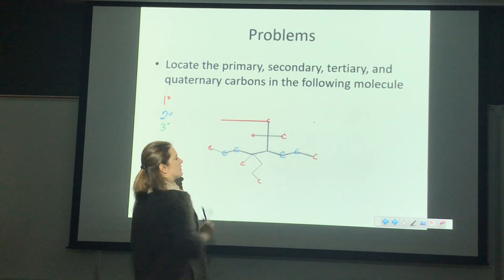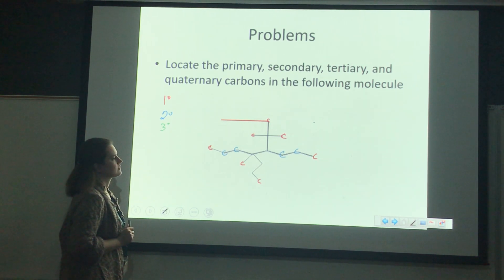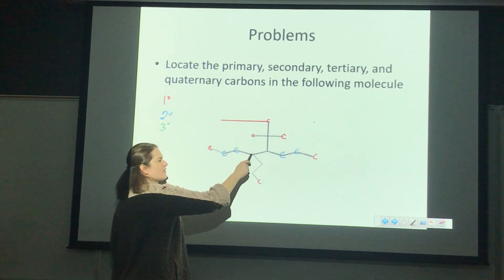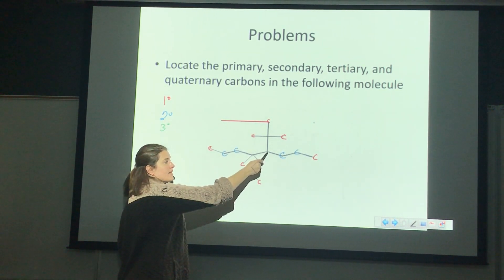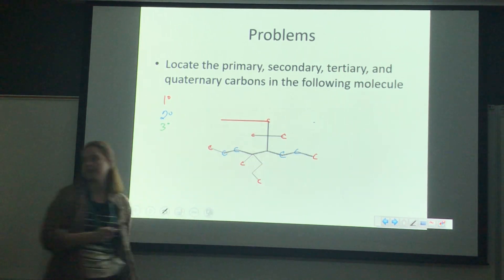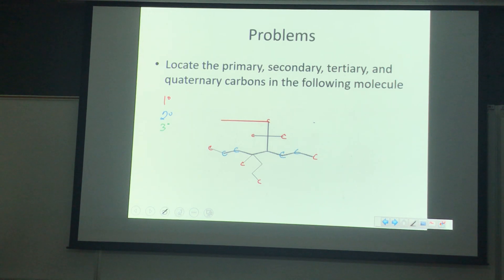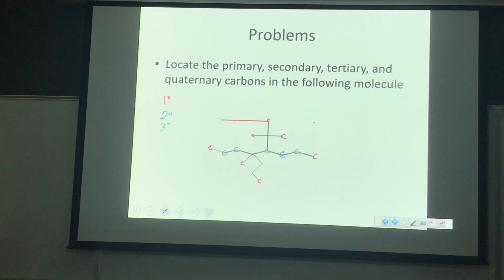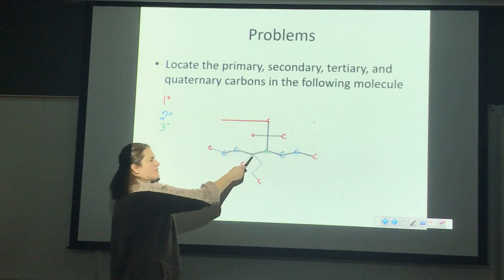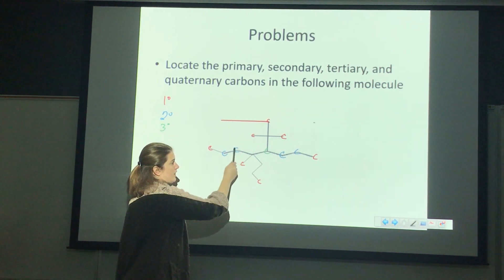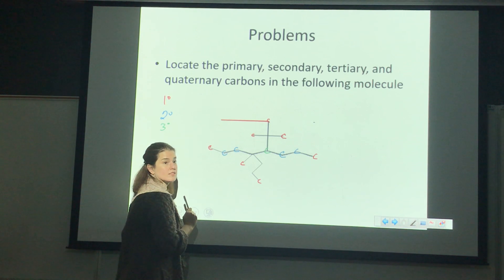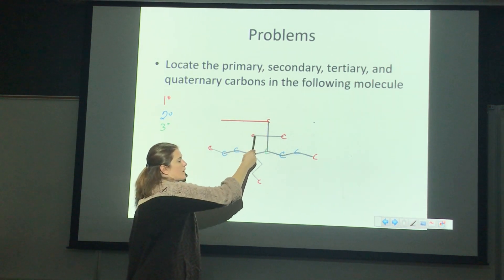If we look at the structure, you can see a whole lot of primary carbons — those are carbons bonded to just one other carbon and three hydrogens. The secondary carbons are bonded to this carbon and that carbon, which only leaves room for two hydrogens following the octet rule. We've got our tertiary carbon bonded to three different carbons with room for only one hydrogen. And our quaternary carbon is bonded to four carbons.